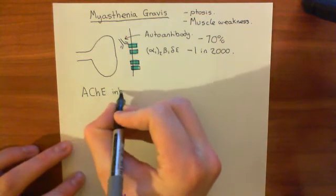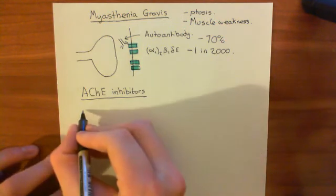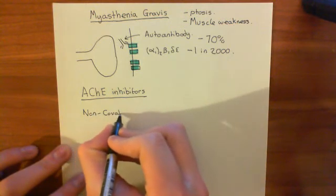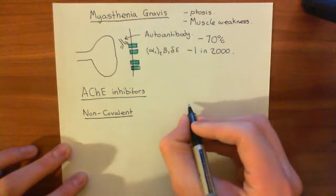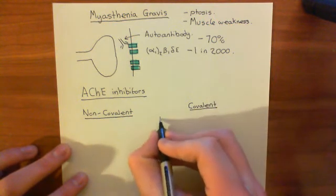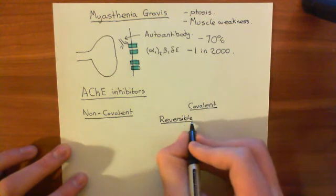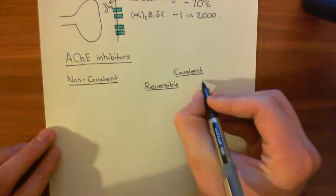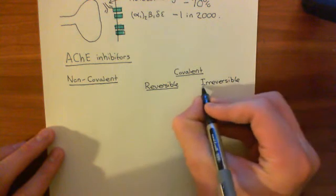You can divide these drugs into three main classes. First, the non-covalent ones, which bind to the acetylcholinesterase enzyme by non-covalent or ionic interactions. Second, covalent but reversible — where the body will eventually break the drug off the enzyme and it will function again. Third, covalent and irreversible — the body has no way of breaking the drug off the enzyme, and the enzyme becomes permanently inhibited.